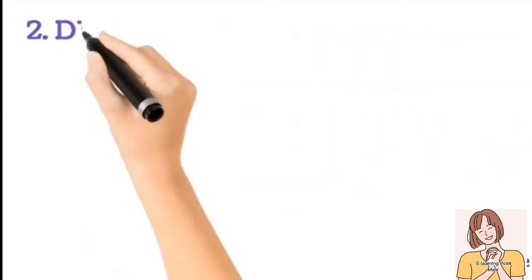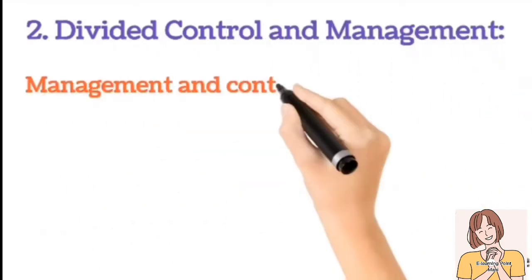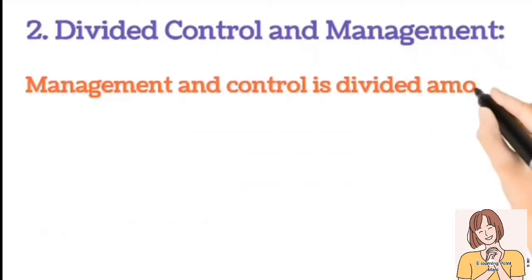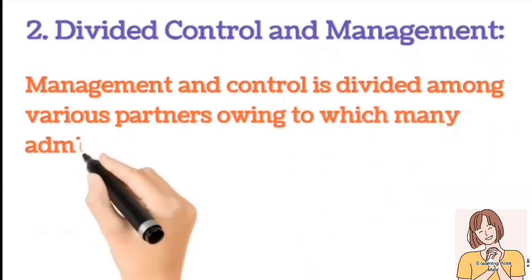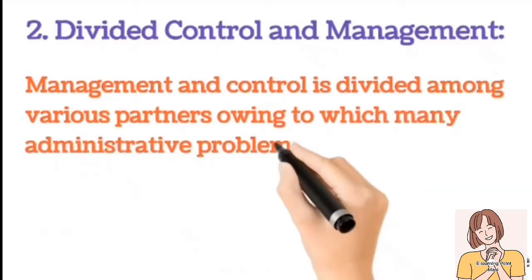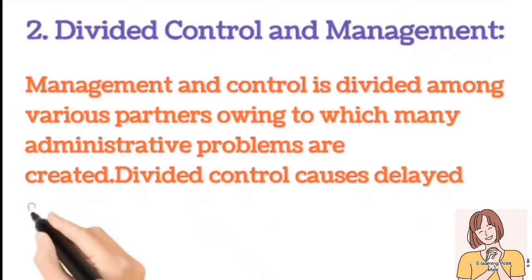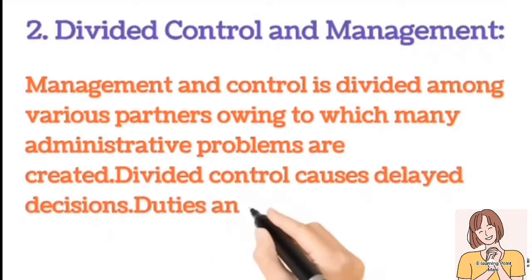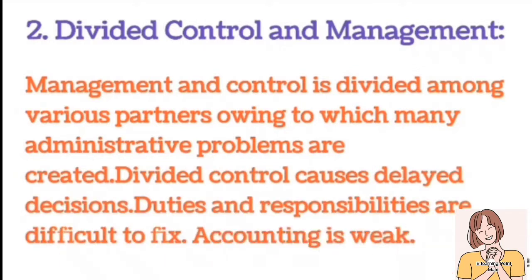Number 2: Divided control and management. Management and control is divided among various partners, which causes many administrative problems. Divided control causes delayed decisions, duties and responsibilities are difficult to fix, and accounting is weak.